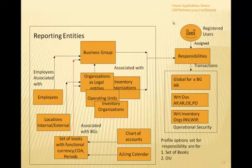On the left hand side of this slide we have the reporting entities, which include business groups, organizations, operating units, employees, locations, and set of books. On the right hand side we have responsibilities, and we can see that each responsibility is linked to these reporting entities. A user has a responsibility assigned to them, and based on that responsibility security, they can perform certain actions.